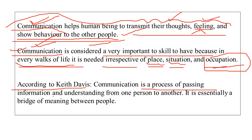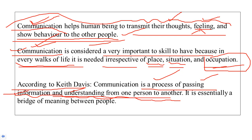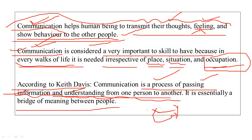According to Keith Davis, communication is a process of passing information and understanding from one person to another. It is essentially a bridge of meaning between people. For example, suppose one person is X and another is Y. X has important information for Y with some meaning — communication creates that bridge of meaning between the two people.